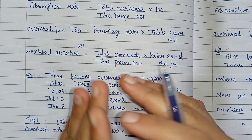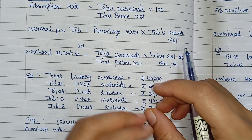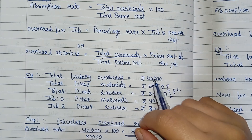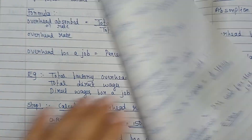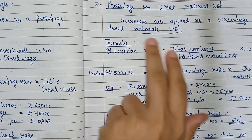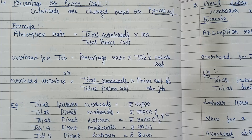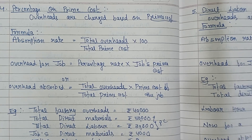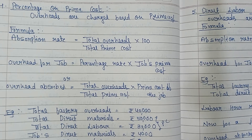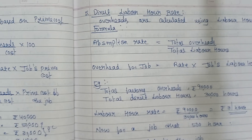So this is about percentage on prime cost. In summary: in production unit the base is total units produced; in percentage on direct wages the base is direct wages; in percentage on direct material cost the base is direct material cost; and in percentage on prime cost the overheads are charged based on prime cost.